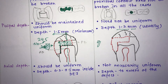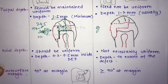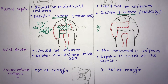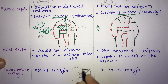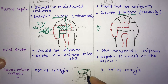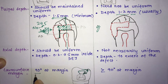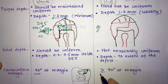The next difference is the cavosurface margin — the angle formed by the junction of the prepared wall and the external tooth surface. In amalgam, it is 90 degrees, whereas in composite it is equal to or greater than 90 degrees at the margin.